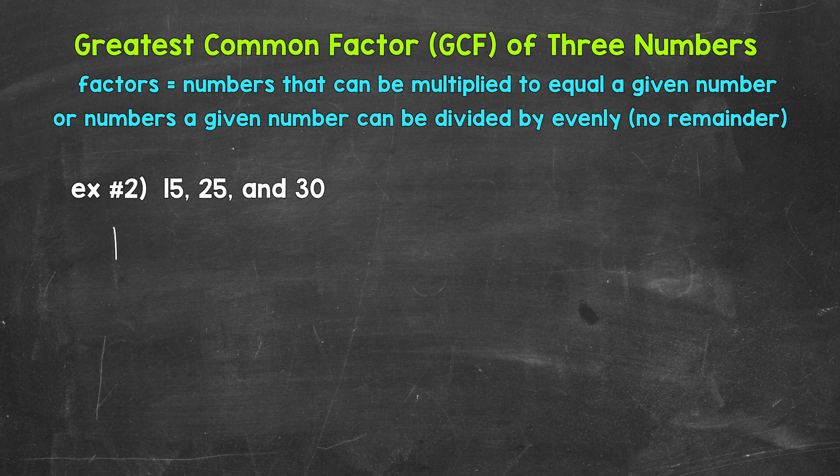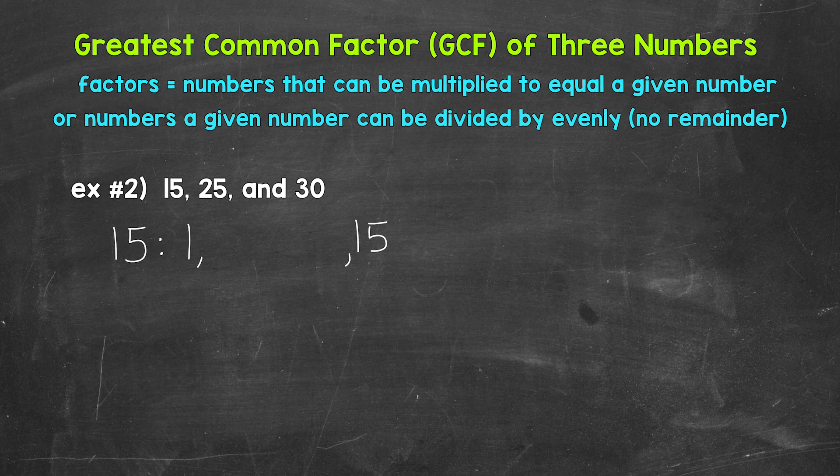We will start with the factors of 15. Remember, we can start with 1 and the number itself. So let's start with 1 and 15, with a gap in between for the other factors. That way we can write the factors in order. Now we need to list the other factors of 15. Think about multiplication facts, division facts, and we can work our way up from 1. There are different strategies and ways to work through this.